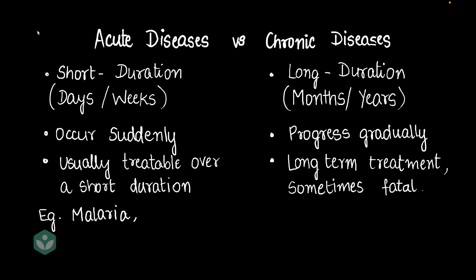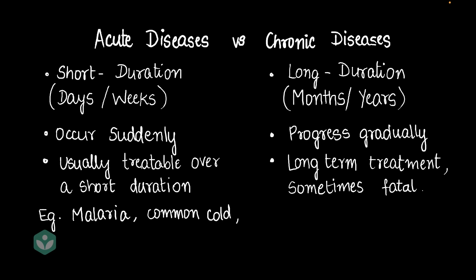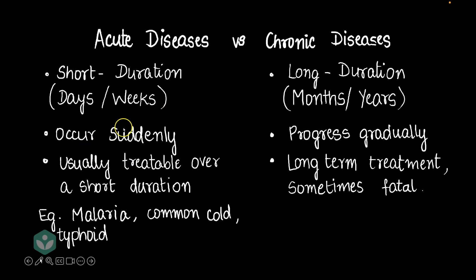Malaria is an example of an acute disease. Malaria happens when an infected mosquito bites a person — that happens suddenly. You contract the infection suddenly, and in a few weeks, just a short duration of treatment and you are fine. Similar with common cold — one day you're fine, some virus infects you suddenly, and then in a day or two you are back to normal. And something similar with typhoid as well — you eat something and suddenly you contract the infection, but then a short duration of treatment and you're back to normal.